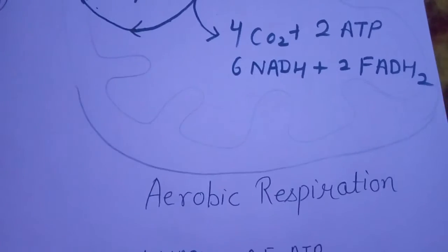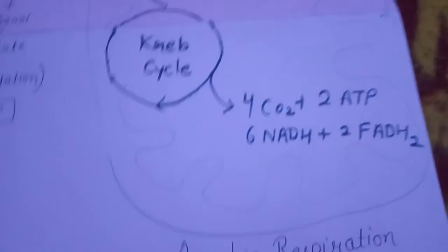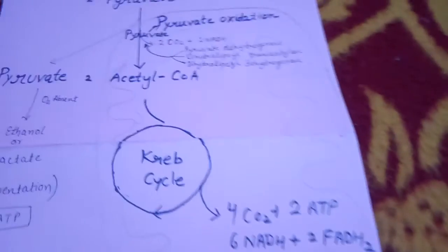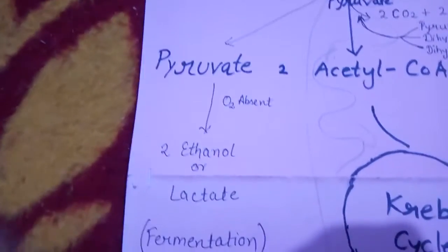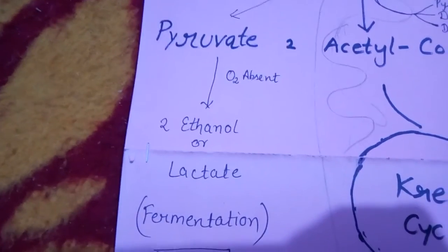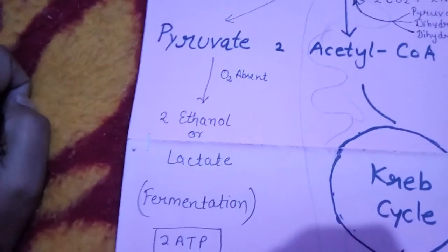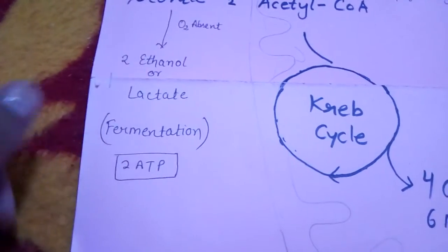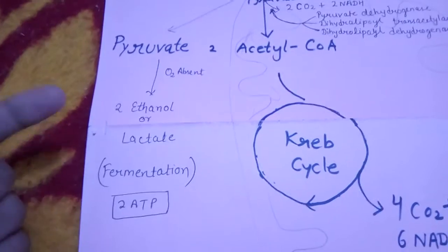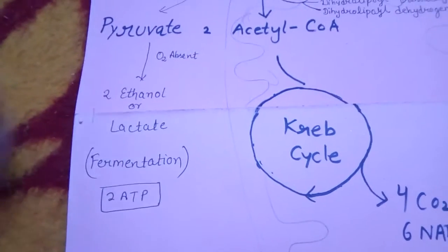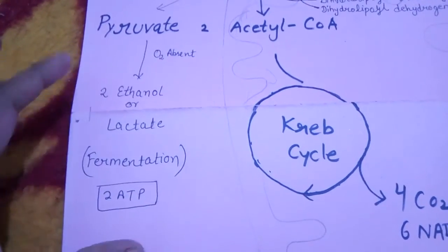This is aerobic respiration. If oxygen is absent, then pyruvate is converted into ethanol or lactate — this process is called fermentation. The production of ATP in the case of anaerobic respiration is very low, only two molecules of ATP.